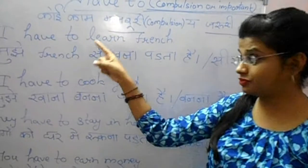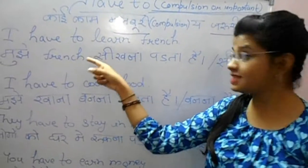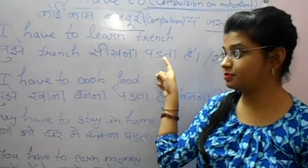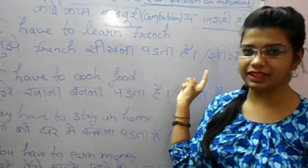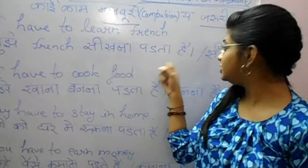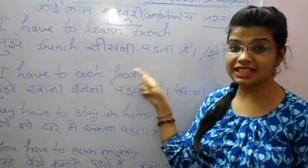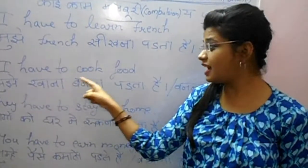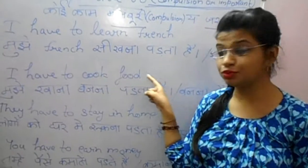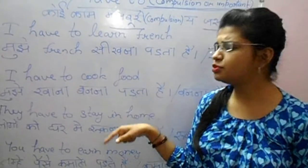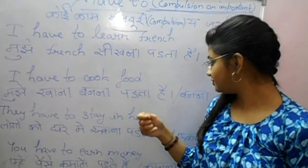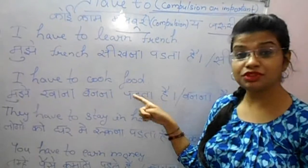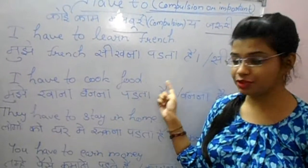So now our first sentence is: I have to learn French. Mujhe French seekhna padhta hai. Ya mujhe French seekhna zaruri hai. Second sentence is: I have to cook food. Mujhe khana banana padhta hai. Ya phe mujhe khana banana zaruri hai.